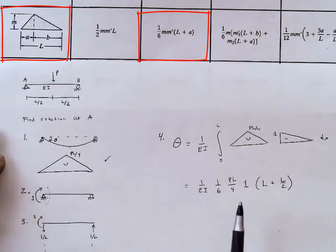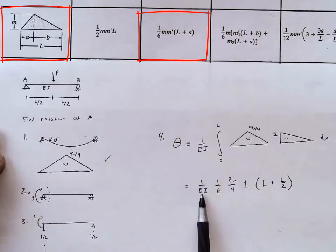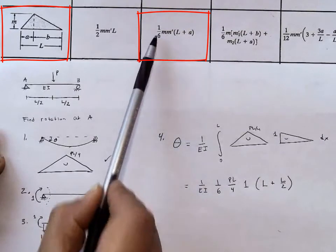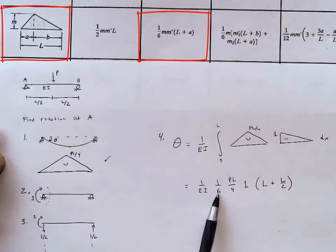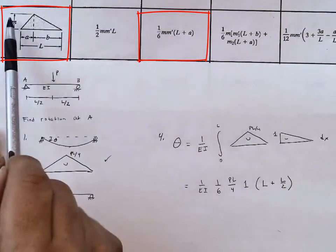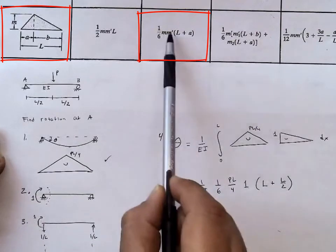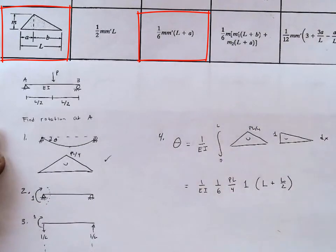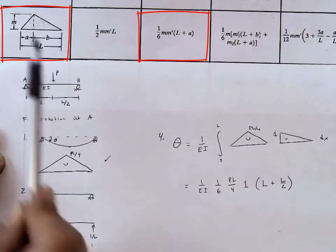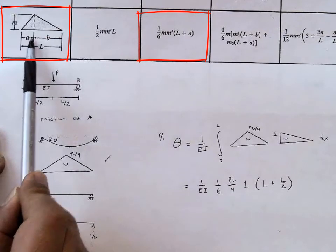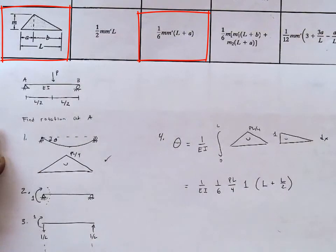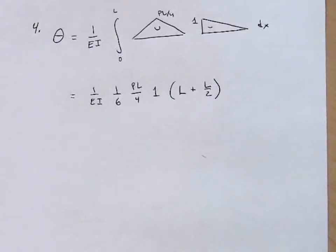Let's just look through these one more time. The 1 over EI comes down here. The 1 sixth is brought over here. M, which is the height of this triangle, is PL over 4. M prime, which is the height of the other triangle, 1. And then the L plus A, the L is right here, and A is the distance from the left end to the peak, which is L over 2. So let's come back to our work here.